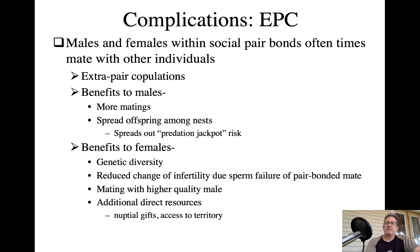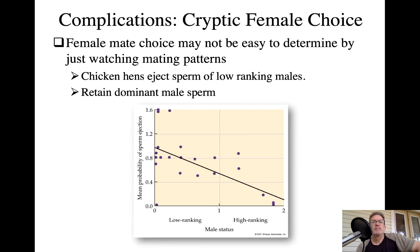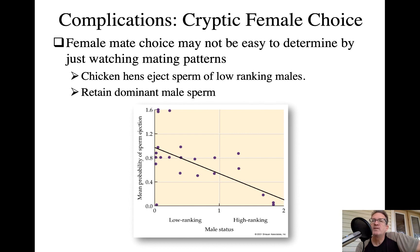Just because a female mates with multiple males doesn't mean she uses all their sperm equally to fertilize her eggs. This is called cryptic female choice — it looks like the female isn't being choosy, but she may be very selective in which sperm she uses. So there really is choice; it's just cryptic and hard for us to observe.